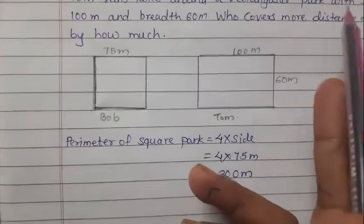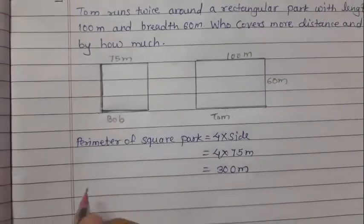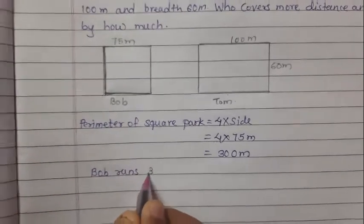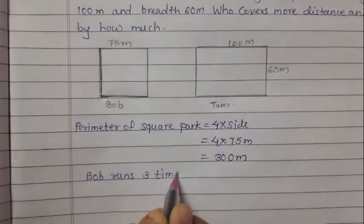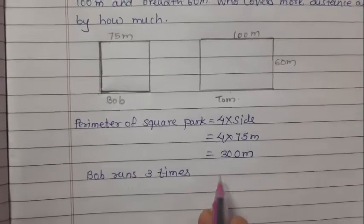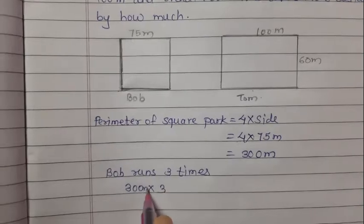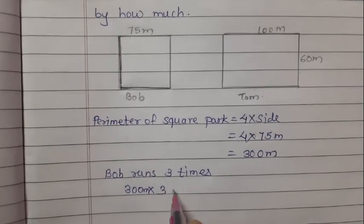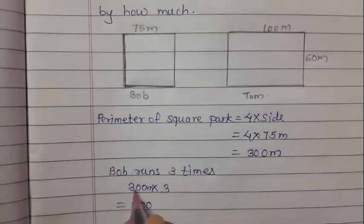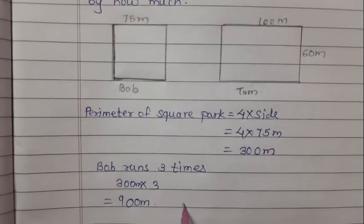Bob runs around the square park 3 times. So we multiply 300 meters by 3. 3 threes are 9, so 900 meters. Bob runs 900 meters.